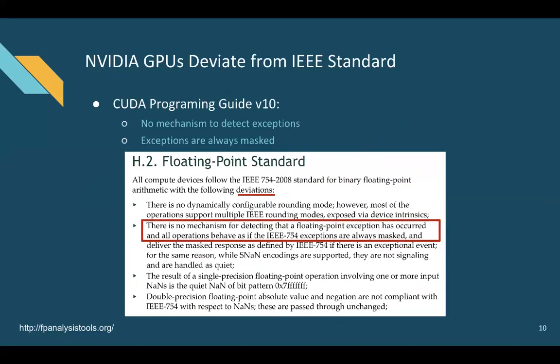Another issue is that even when we have the IEEE standard for floating-point, some architectures do not implement it fully — they have deviations from the standard. One example is NVIDIA GPUs, where there are no mechanisms to detect exceptions. Exceptions such as division by zero or underflows are always masked. This means there may be programs with numerically incorrect results because of an exception, and the programmer doesn't know because there's no mechanism in the GPU to detect it. Fortunately, we are developing tools to solve this problem.